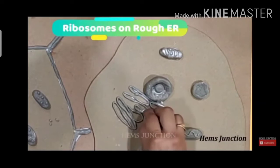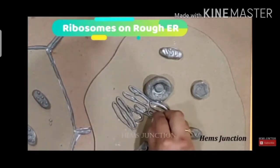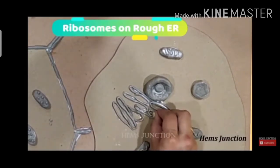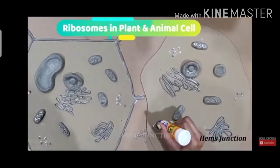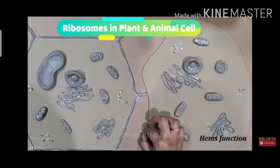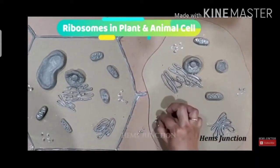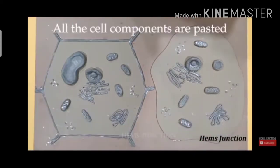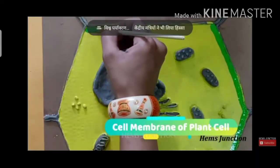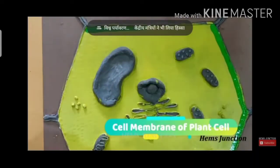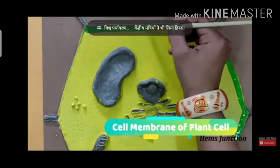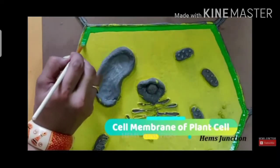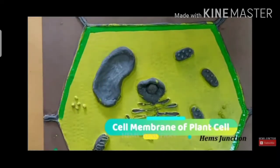First, watch this video carefully, and after watching the video you can discuss with me. Watch every step of the activity carefully. After making all the cell organelles with clay, you will need to color each cell organelle.